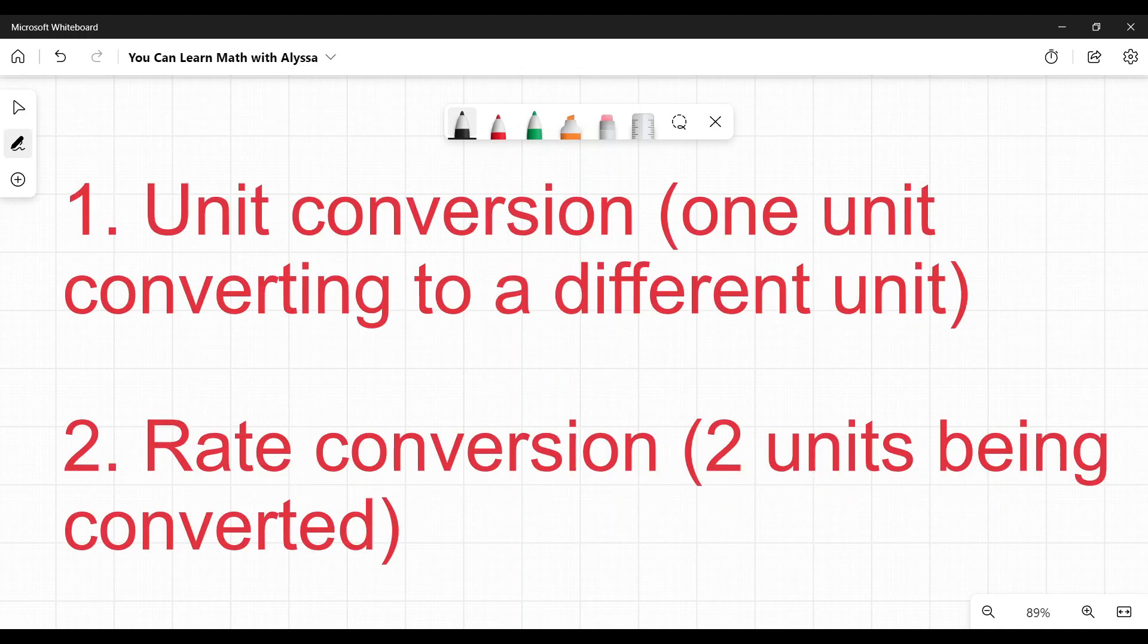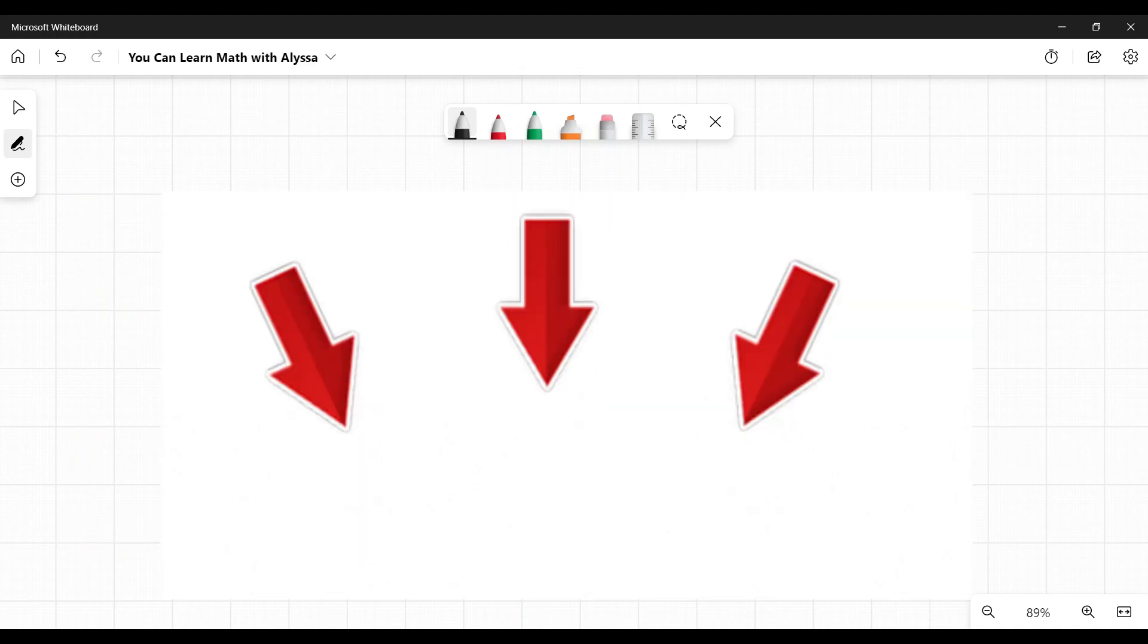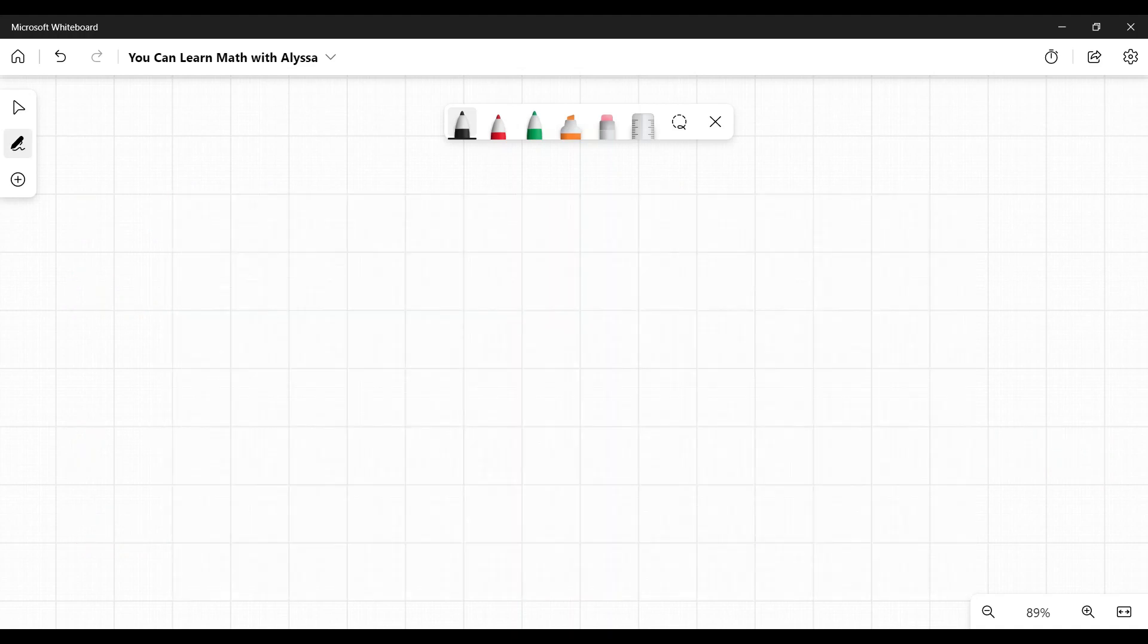So I'm going to do the units first, just the plain units, and then we're going to move on to the rate. So I'm going to put links in the description below. So if you need to jump forward to that rate, those types of problems, if you're needing help with those, you can jump forward straight to the rate section. So first things first, how do we convert units, just straight units?